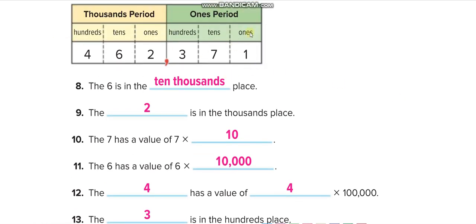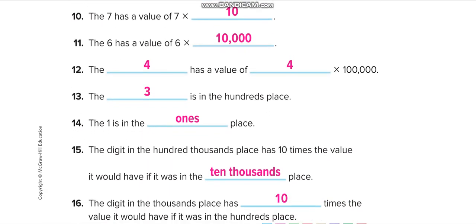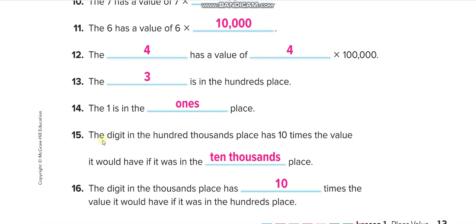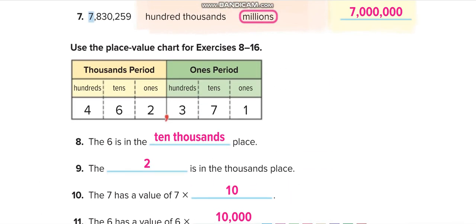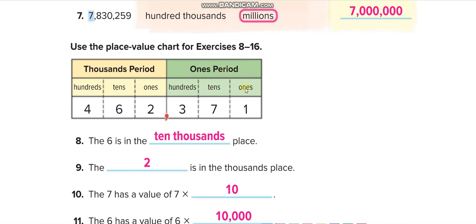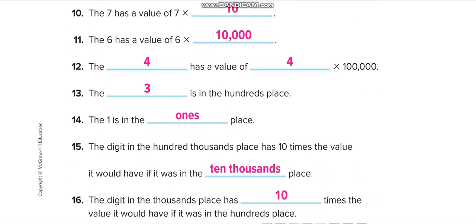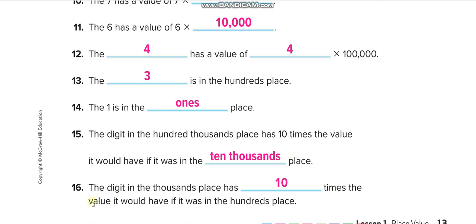The one is in the blank place — here is the one, it is at the ones place. For number 15: the digit in the hundred thousands place has ten times the value it would have if it were in the blank place — the place to its right. As I told you before, moving left each time means we are multiplying by ten, making it ten times greater.